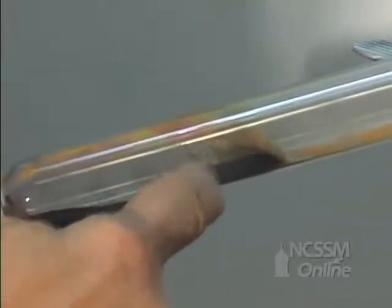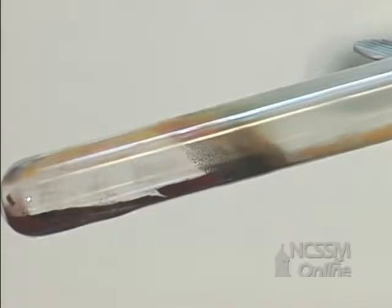The mercury metal we can see as a metallic gray ring in the test tube.